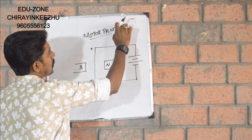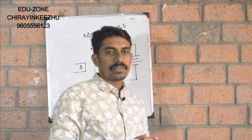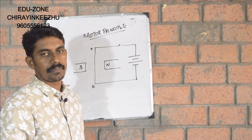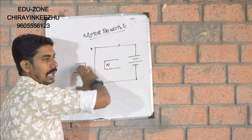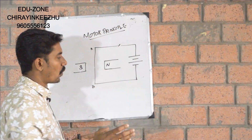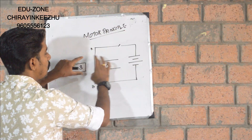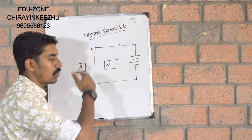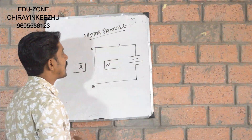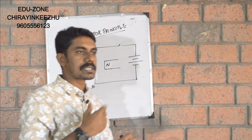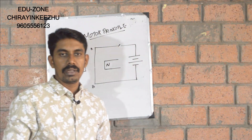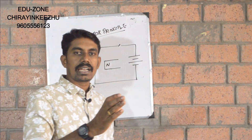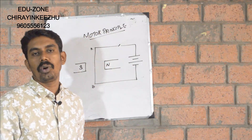What is a conductor which carries a current in a magnetic field and is under force? If a conductor carries a current in a magnetic field, it experiences a force. If the current flows in a north-south direction in the magnetic field, there is a force on the conductor. This is called the Motor Principle.